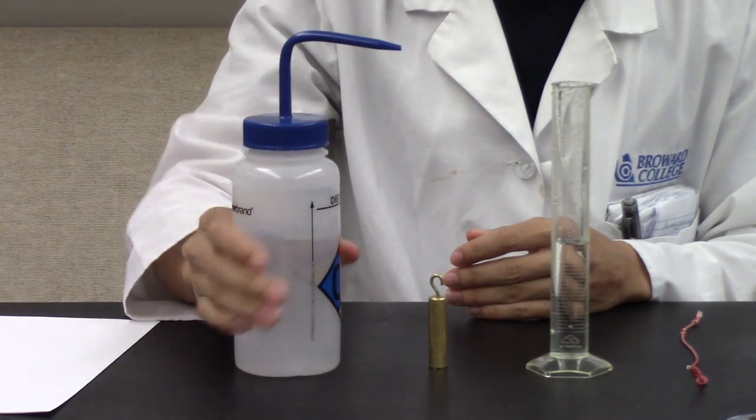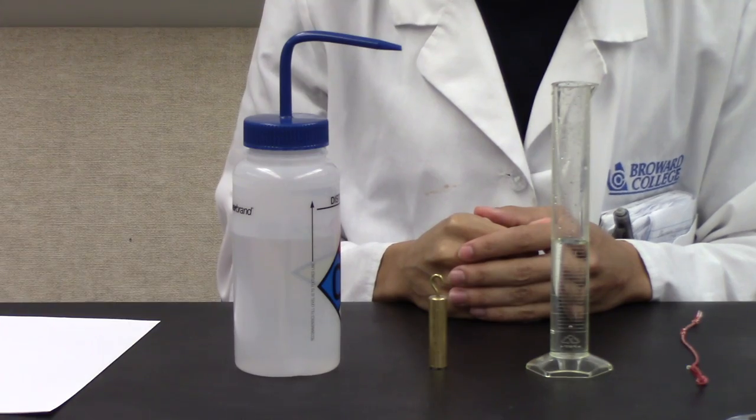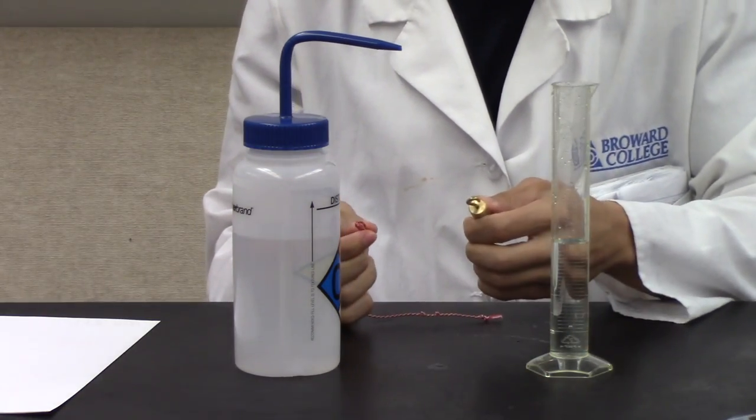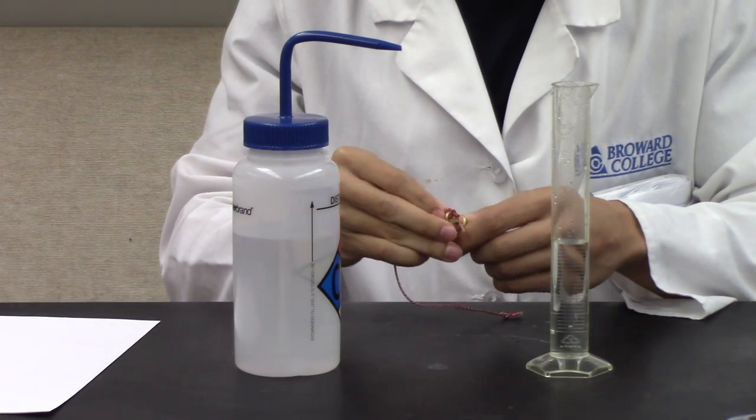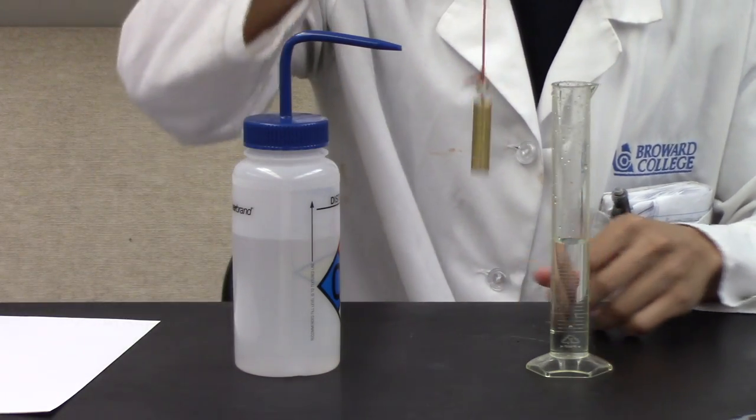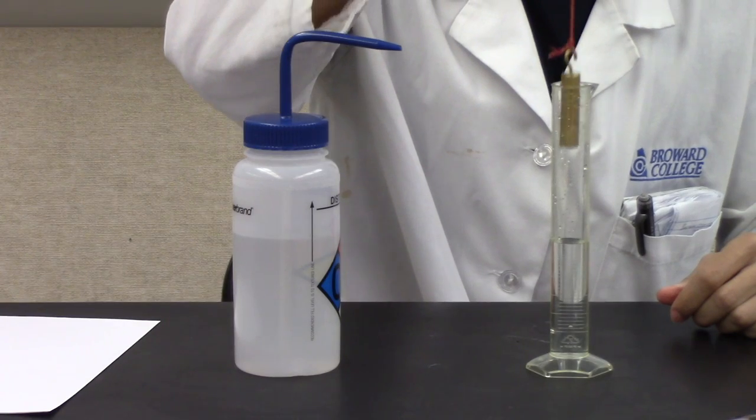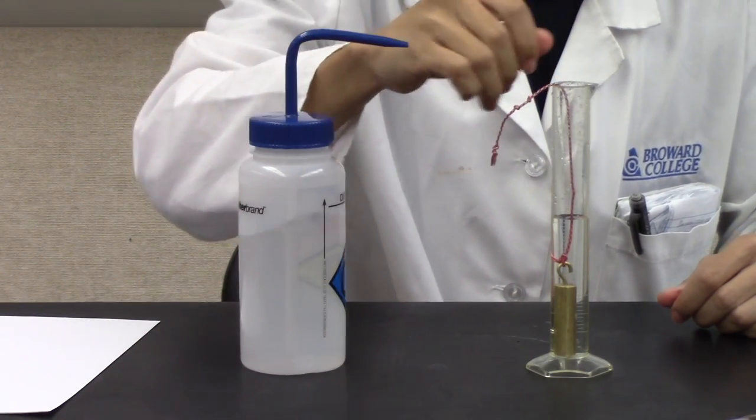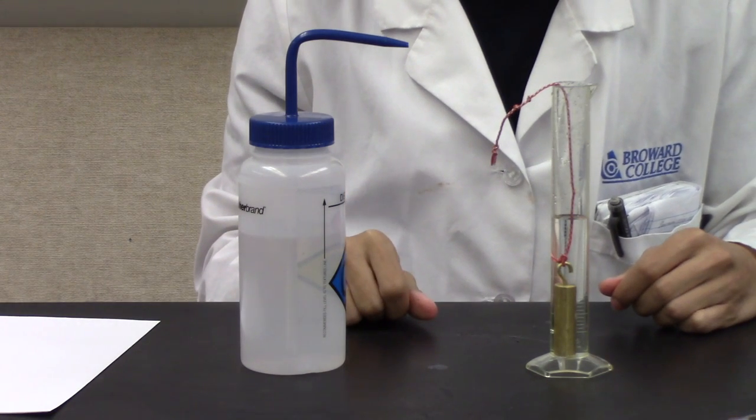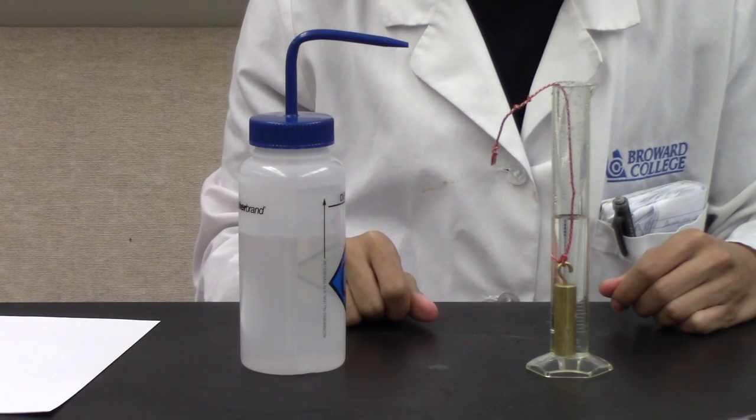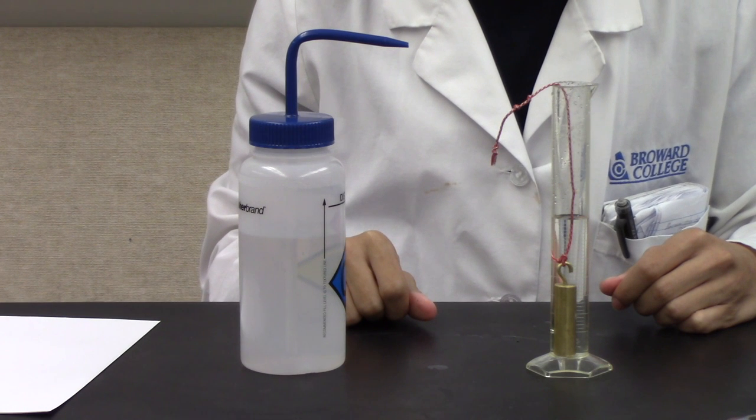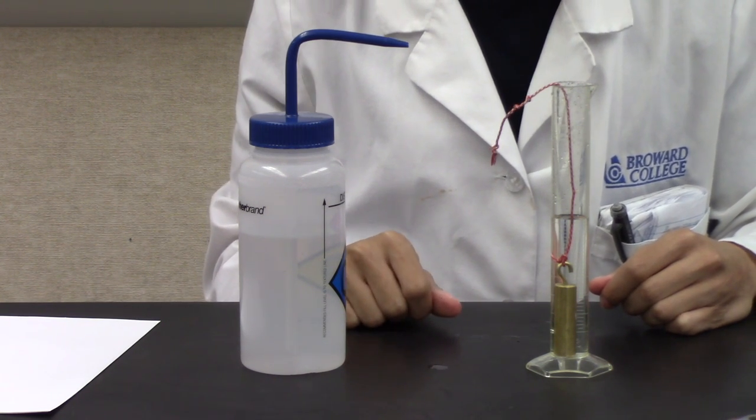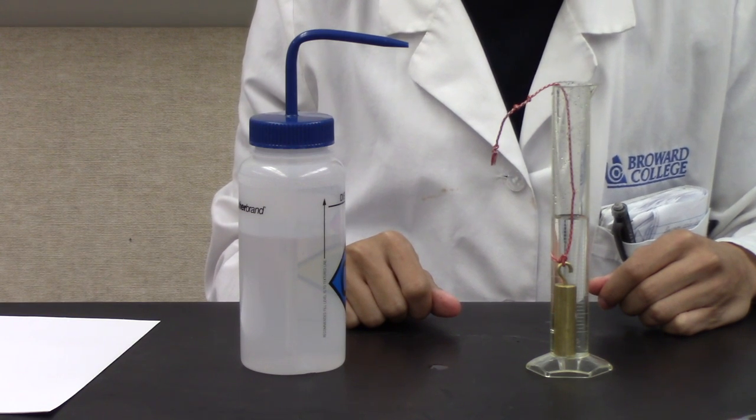Be sure to record this initial volume in your notes. You will then lower the irregular shaped object using the hook located on the object and a piece of string. Slowly lower the object into the graduated cylinder. And record this final volume in your notes. You can then find the volume of the object by subtracting the initial volume from the final volume.